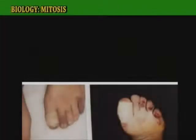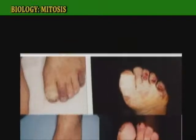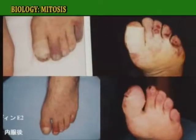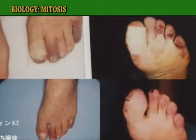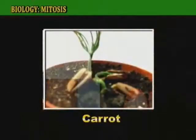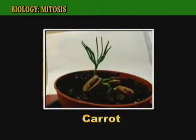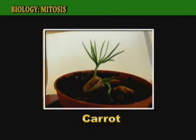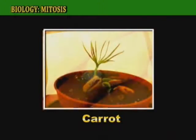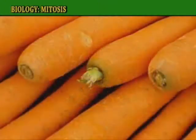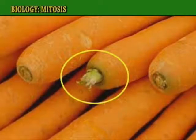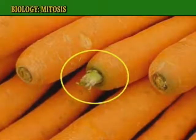If you damage your toe, new cells are made via mitosis during the healing process. When a carrot grows in the vegetable rack, it does so via mitosis, so the new cells which are formed have identical genetic material to the original carrot.